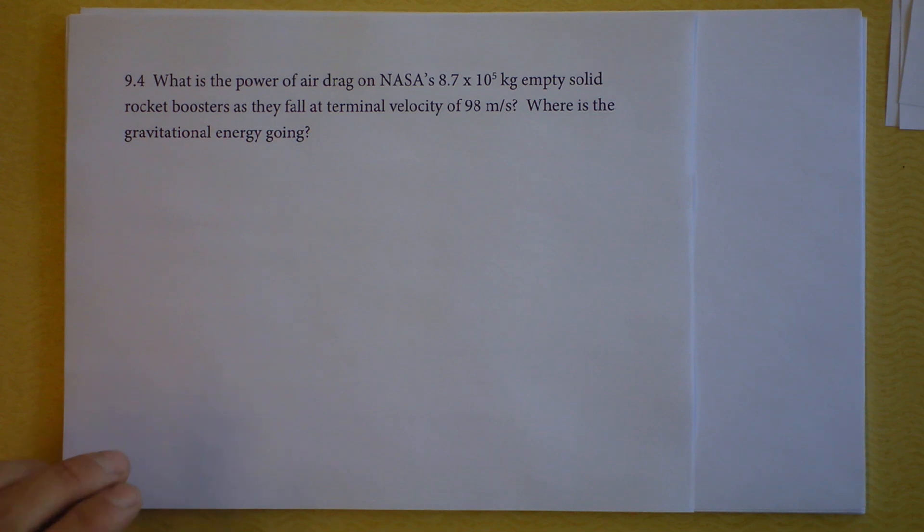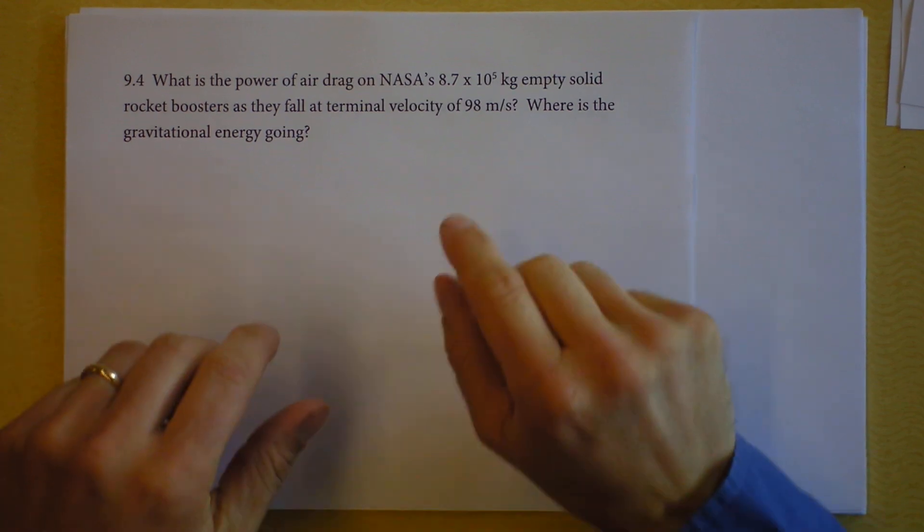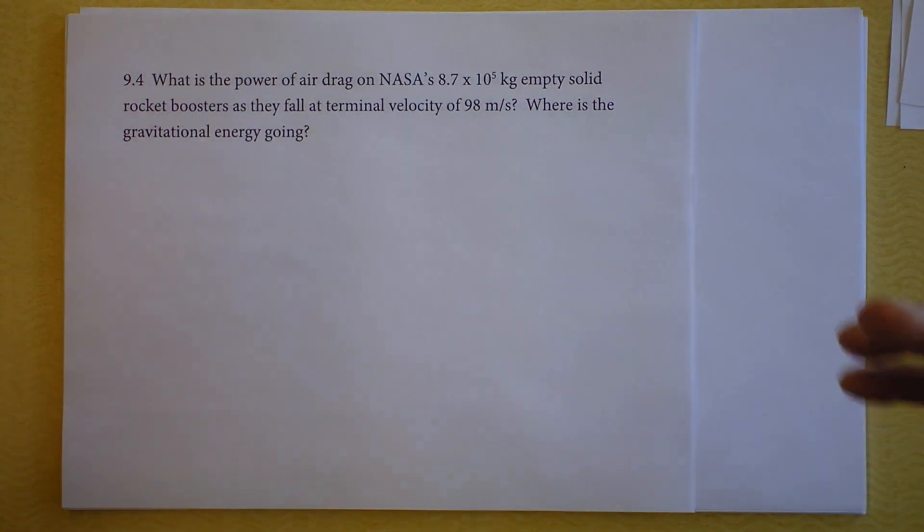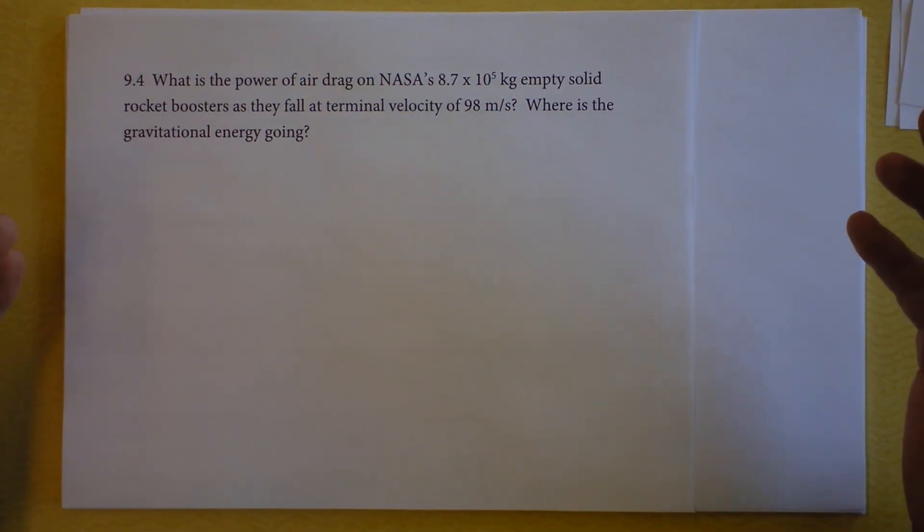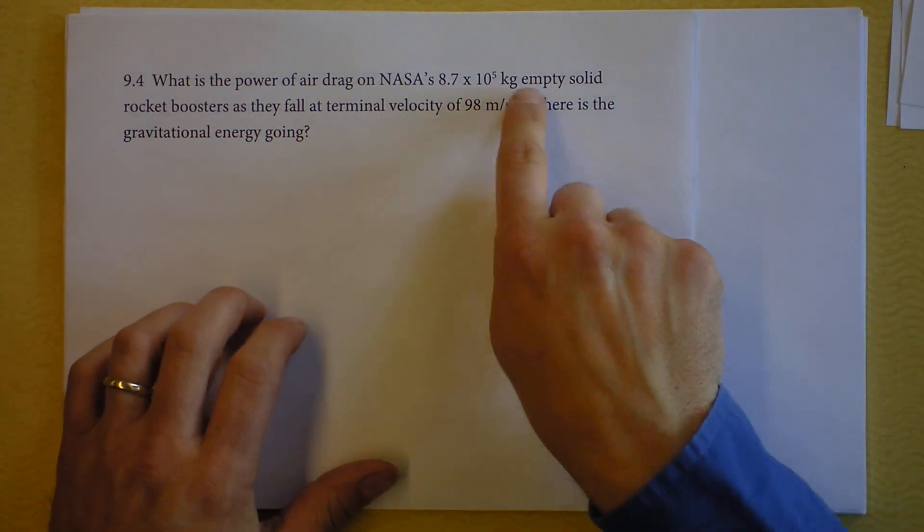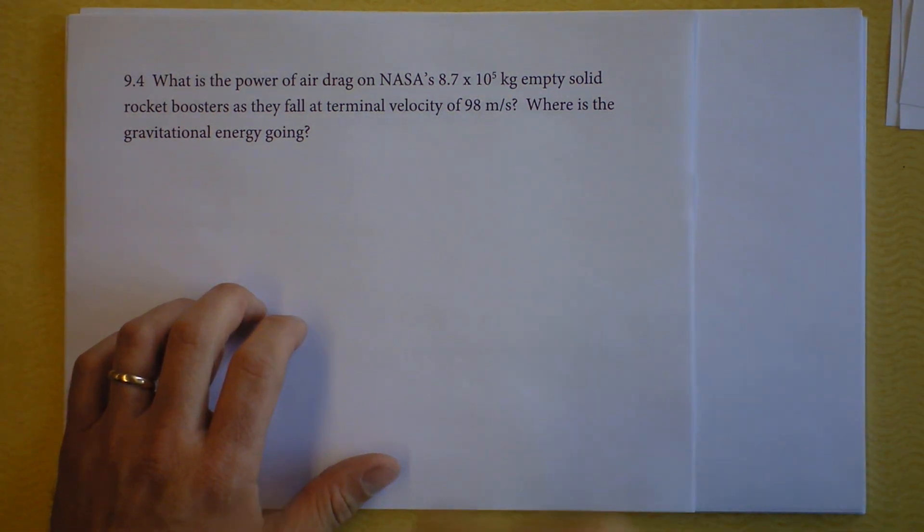This next problem is about NASA. See, they like to launch stuff up into space. But the process of doing that is extremely energy consumptive. You have to take these tanks that on their own weigh 800,000 kilograms, and that's when they're empty. And then you have to fill them full of this solid rocket fuel and burn all of the fuel, so all of that is consumed. And then you drop these things back to Earth. And this is approximately their terminal velocity as they're falling.